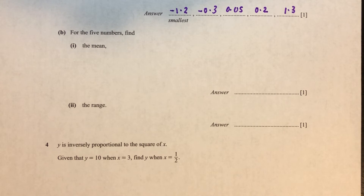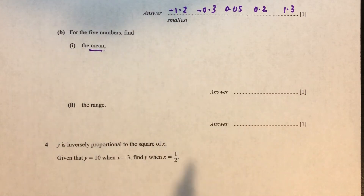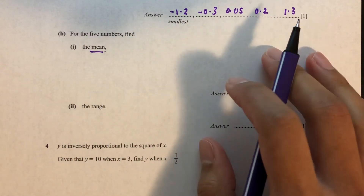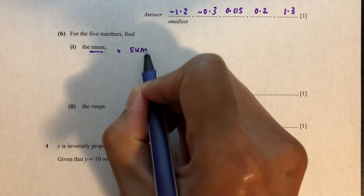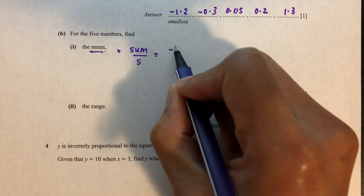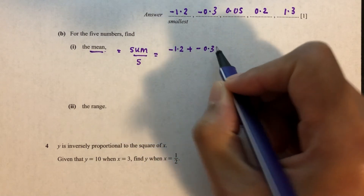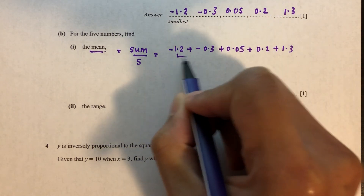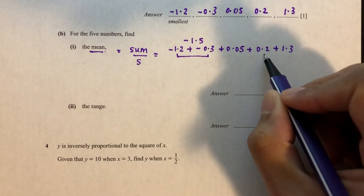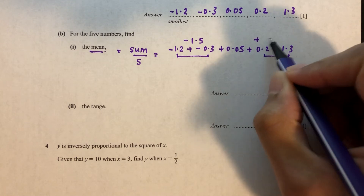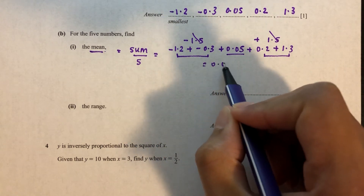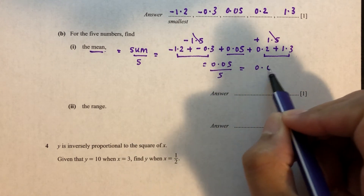Part B: find the mean of the five numbers. The mean is the sum of all numbers divided by five. The sum is minus 1.2 plus minus 0.3 plus 0.05 plus 0.2 plus 1.3. Minus 1.5 and plus 1.5 cancel out, leaving 0.05 divided by 5, which equals 0.01. That's your answer.